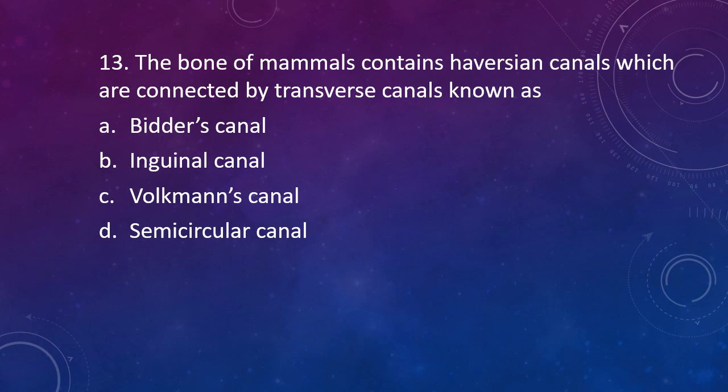Question number 13. The bones of mammals contain Haversian canals which are connected by transverse canals known as: Bidder's canal, inguinal canal, Volkmann canal, or semicircular canal. The correct answer is Option C, that is Volkmann canal.